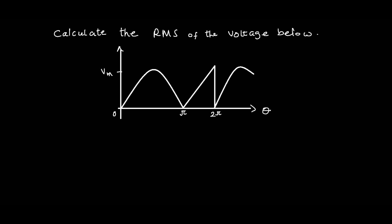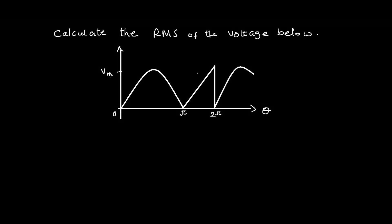In this lesson, we are going to learn how to calculate the RMS value of this voltage waveform. To do this, we have to follow a few steps. The first thing to do is to calculate the square area of this waveform, then divide the square area by the period, then take the square root of that — and that will give us the RMS value of this voltage waveform.